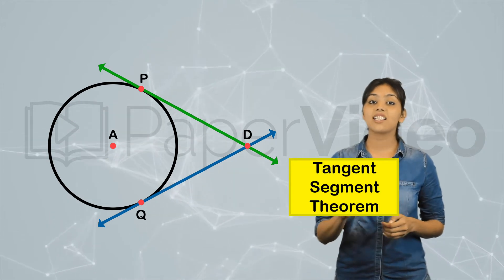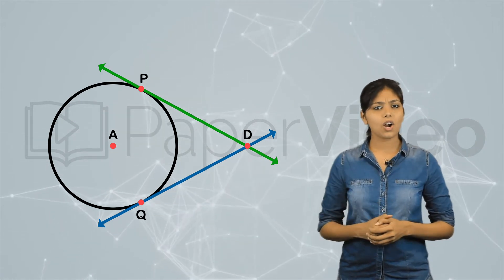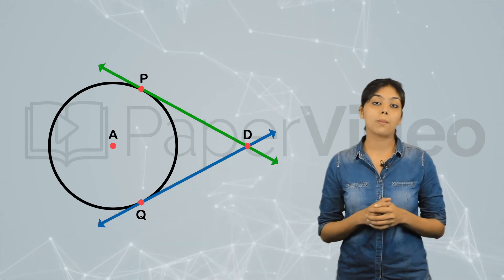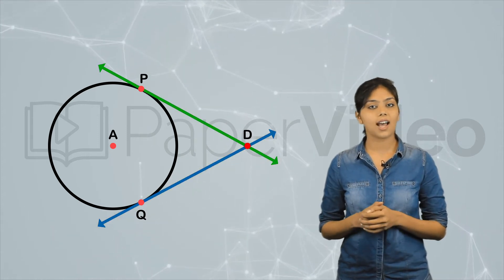let us understand the Tangent Segment Theorem. According to this theorem, tangent segments drawn from an external point to a circle are congruent.